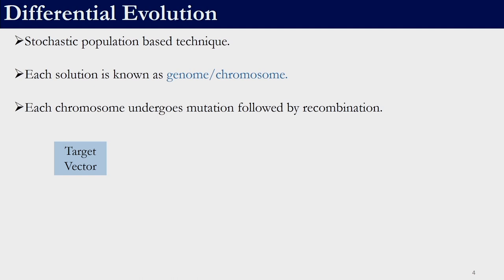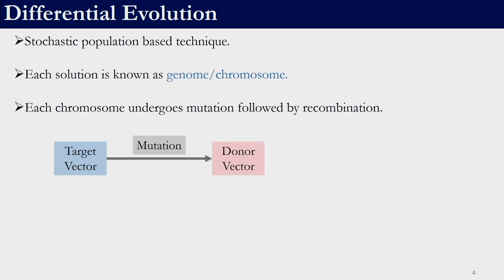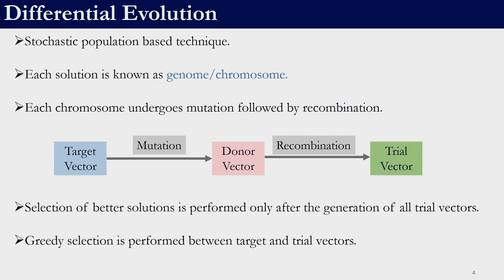There are a few terminologies we need to keep in mind. One is the target vector — the solution which is undergoing evolution. The target vector is used in mutation to generate a donor vector, and the donor vector undergoes recombination to obtain the trial vector. Between the trial vector and target vector, a greedy selection is employed — whichever solution is better will survive for the next generation. Selection of the better solution is performed only after the generation of all trial vectors.